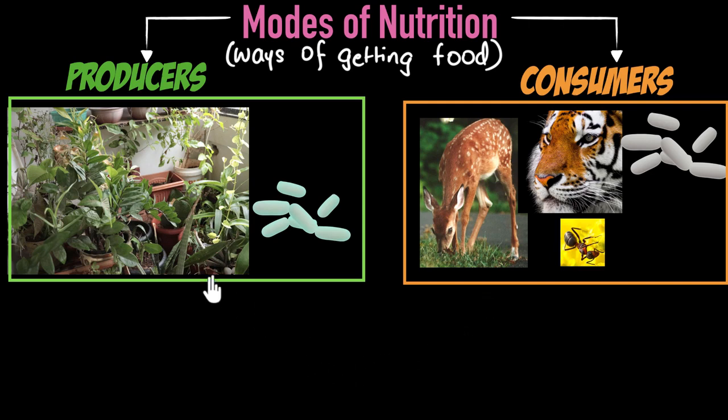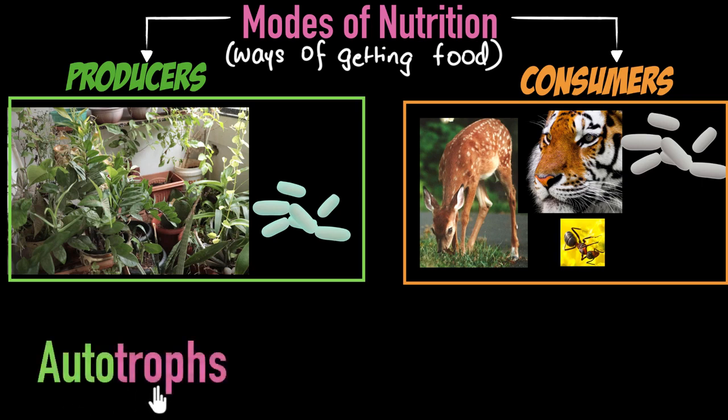Now, before we proceed, let me tell you their biological names. In biology, everything has a technical name. The technical name or the biological name of producers is autotrophs. The word auto means self, and trophs means nourish. So this means they can self-nourish. They can make their own food, they can feed themselves, self-nourish.